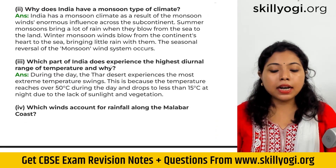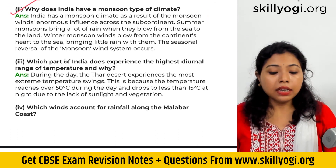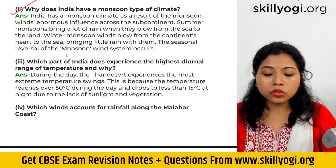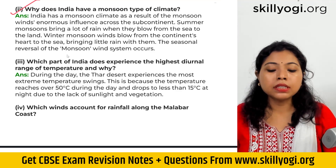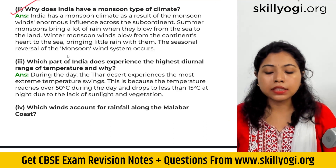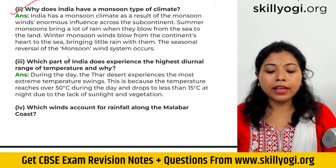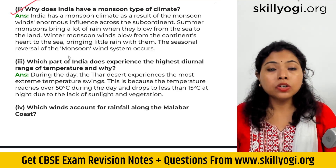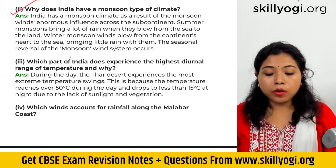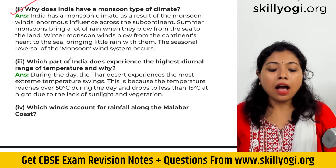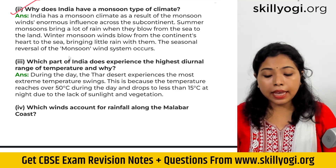Why does India have a monsoon type of climate? India has a monsoon climate as a result of the monsoon winds' enormous influence across the subcontinent. Summer monsoon brings a lot of rain when they blow from the sea to the land. Winter monsoon winds blow from the continent to the sea, bringing little rain with them.